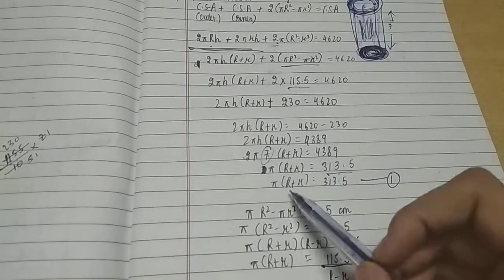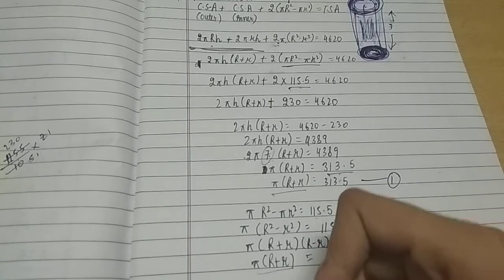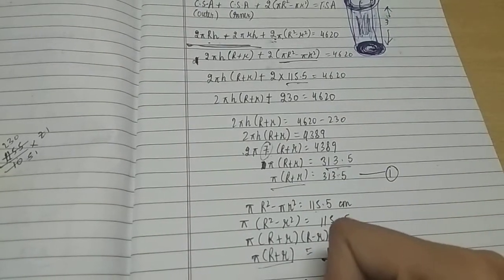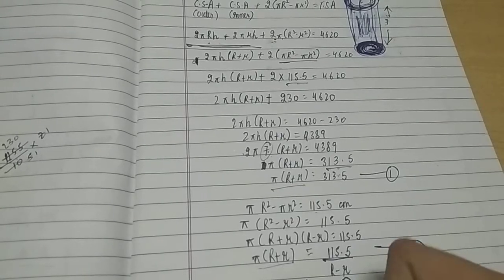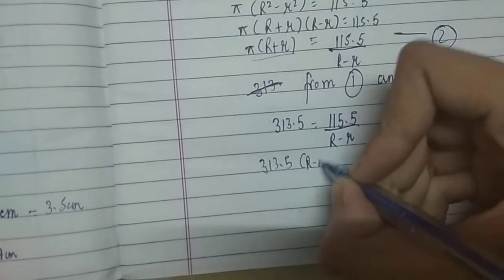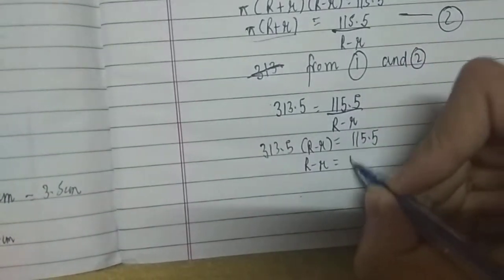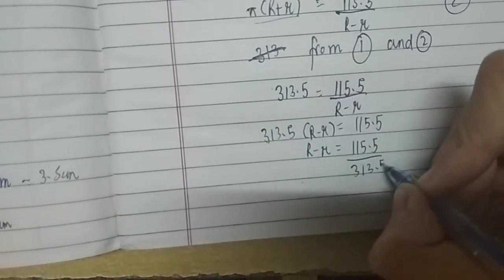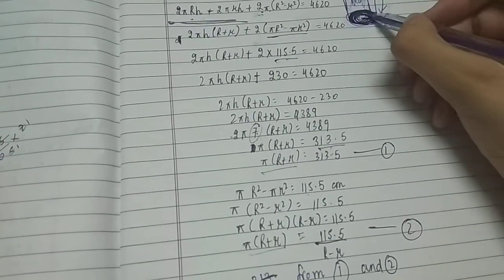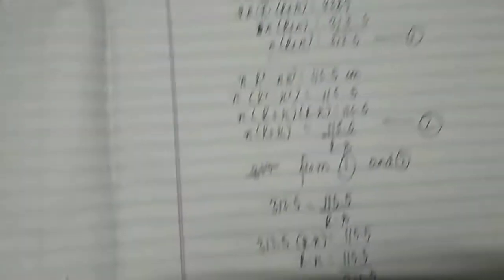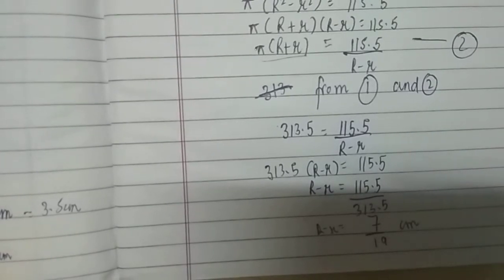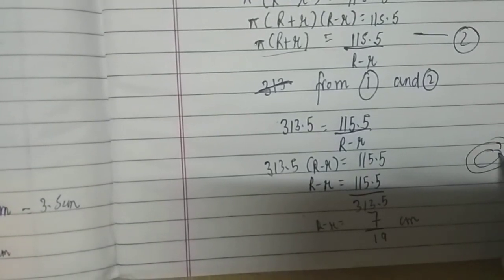From Equation 1 and Equation 2, both right-hand sides give the value of π(R + r), so we equate them: 313.5 equals 115.5 divided by (R − r). Therefore R − r equals 115.5 divided by 313.5, which gives 7/19 centimeter. So R minus r, which is the thickness of the cylinder, is 7/19 centimeter.